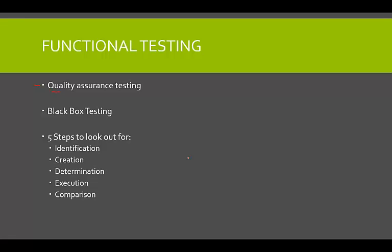Functional testing is a quality assurance process and it's like a type of black box testing. When we talk about black box testing, we're referring to the method that software testing takes place. Black box testing is a method of software testing that examines the functionality of an application — so for our mail application that Google is going to launch, they will do black box testing. Essentially, black box testing is about how the software works.